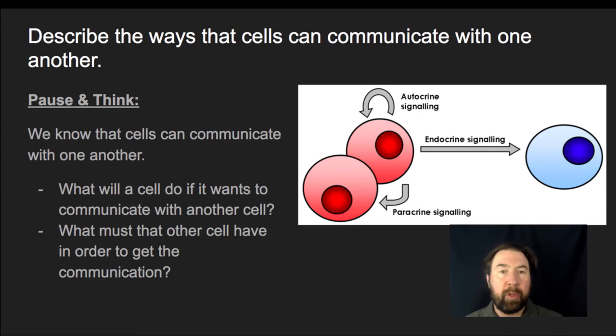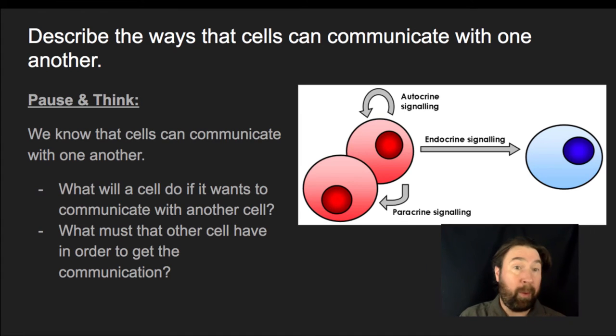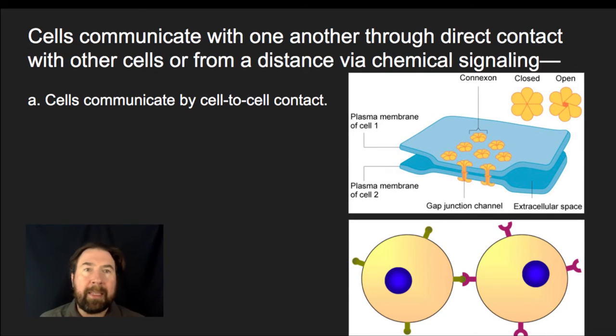So hopefully you had those two components, that it's going to be some sort of chemical signal that's sent out, and then some sort of receptor that is able to receive that signal, and then do something with it. So let's talk a little bit about cells communicating with one another. And we're going to start specifically with the cells that communicate through cell-to-cell contact.